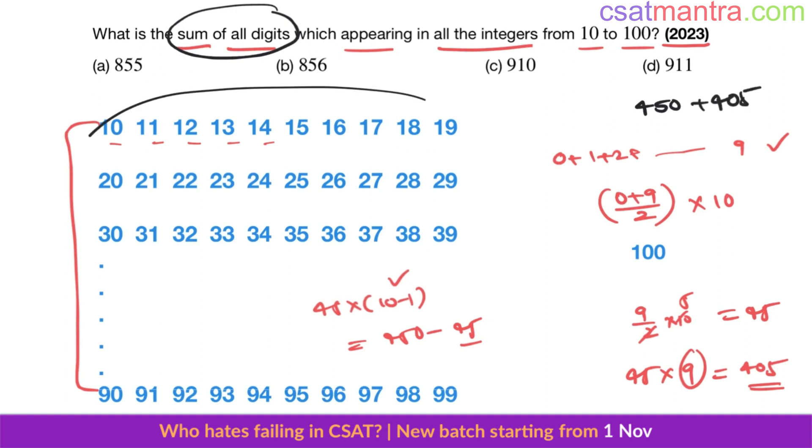We have counted sum of all digits here. For 100, that is 1 plus 0 plus 0, which is 1. So 450 plus 405 is 855, plus 1 is 856. Answer B.